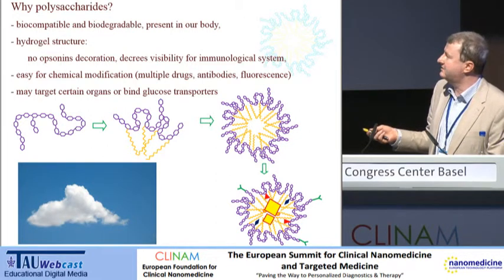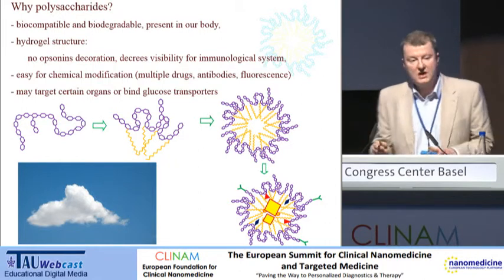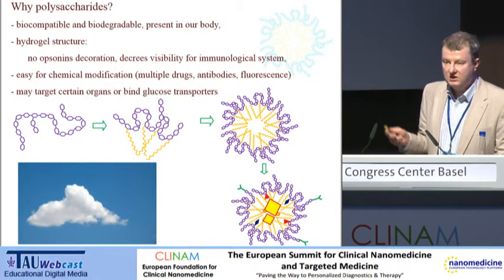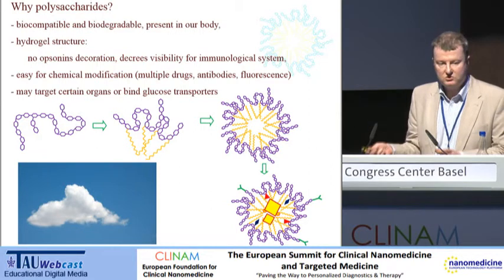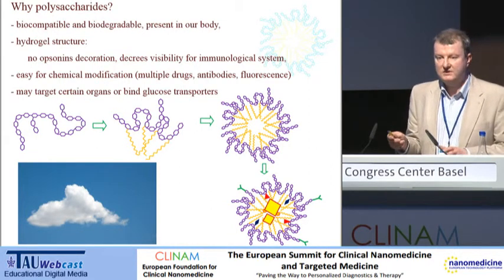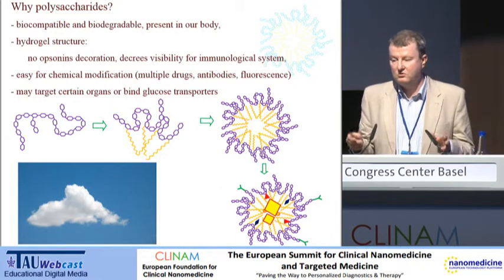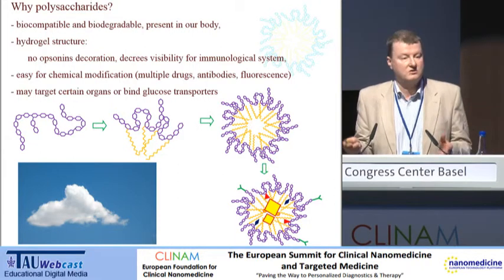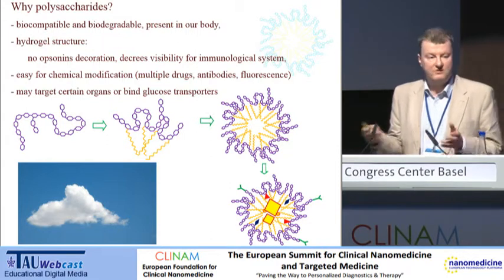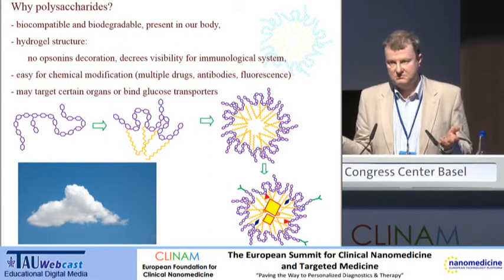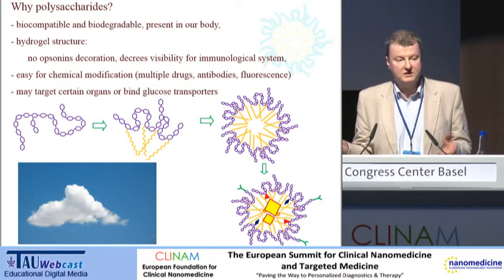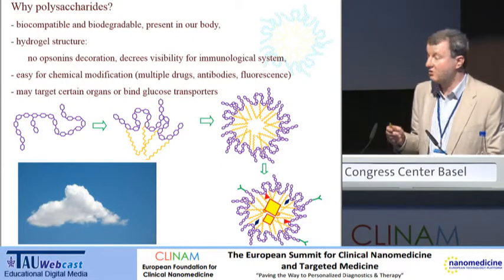As polysaccharides, they may also target certain organs, or they can even target the glucose transporters on the surface of cells. It is well known that glucose consumption is really high in cancer cells — this is the so-called Warburg effect. Cancer cells can have a 200 times higher glucose demand than normal cells.